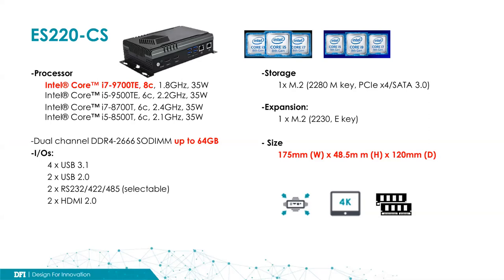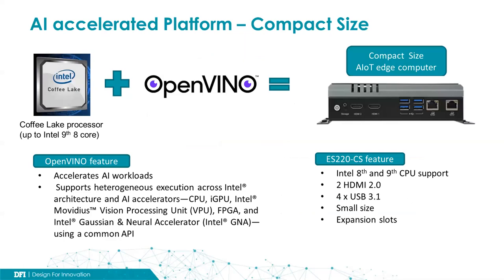The ES220-CS model delivers high performance and fast response when needed to power real-time intelligence. It is designed for data center and edge use across a wide range of AI-based vertical applications. The ES220-CS is a small form factor system that, with Intel OpenVINO, enables AI application deployment, and users can prototype and deploy their own deep neural networks.